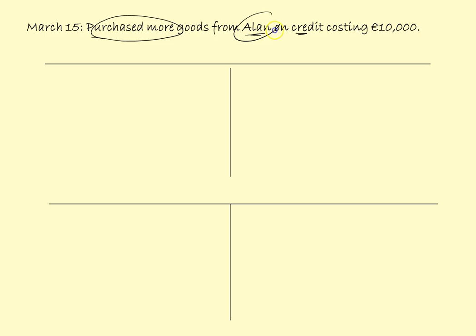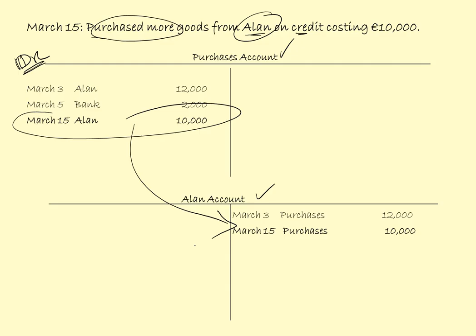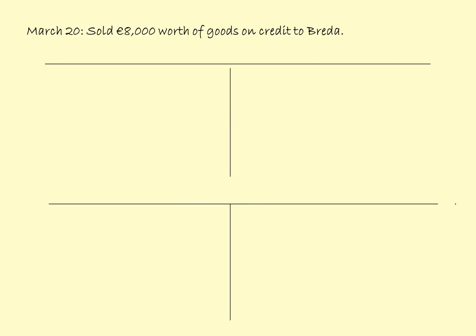March the 15th: purchased more goods from Alan on credit. So it's the purchases account and Alan's account — we already have both of those. We're purchasing more goods, so we debit purchases: March the 15th, Alan, 10,000. And we will be crediting Alan's account: March the 15th, Purchases, 10,000.